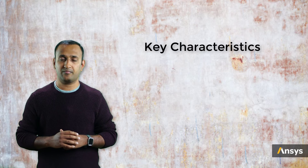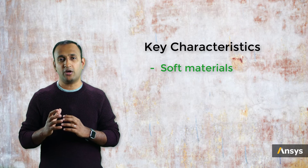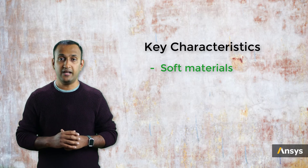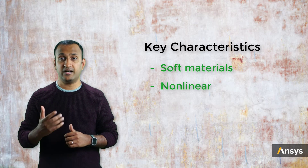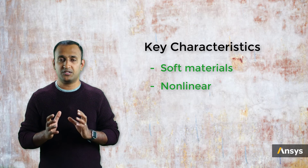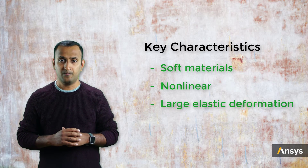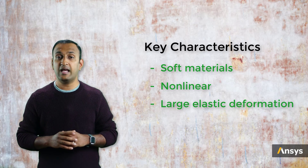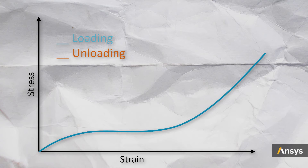Now, let's look at the key characteristics of hyper-elastic materials. The first thing that we notice is that they are generally soft in nature, especially compared to metals. As we have discussed, their stress-strain response is non-linear, which means that the slope of the curve — which is the instantaneous stiffness of the material — changes with the strain. These materials are known to undergo large deformation with very little to no plastic deformation before they fail. This means that the stiffness, or the stress-strain curve, is monotonically increasing until failure.